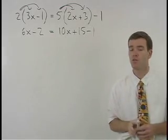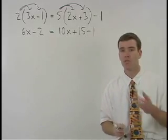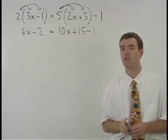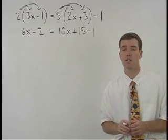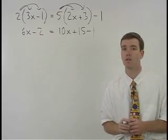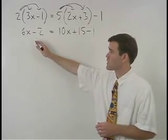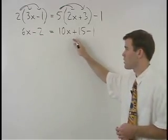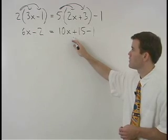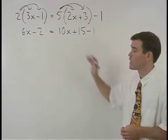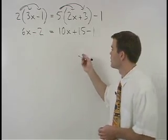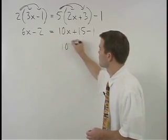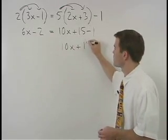Now here's the most important step. Before moving on, make sure that you've simplified both sides of the equation as much as you can. Notice that the left side of the equation cannot be simplified any further. But on the right, 10x plus 15 minus 1 can be simplified to 10x plus 14.